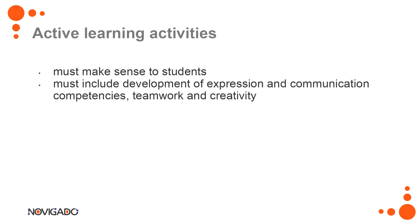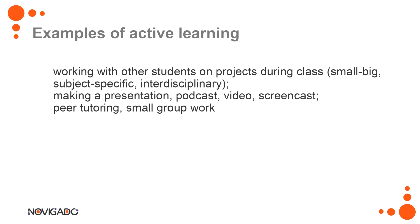Examples of active learning — the most often used, and I think every teacher uses this, is working with other students on a project. It can be a small, subject-specific project, a bigger interdisciplinary one, or a whole school project. For example, even in distance learning, we have projects where students collaborate using different ICT tools — for instance, investigating what it means to be happy during the time of a pandemic. There are many different projects you can do with students right now.